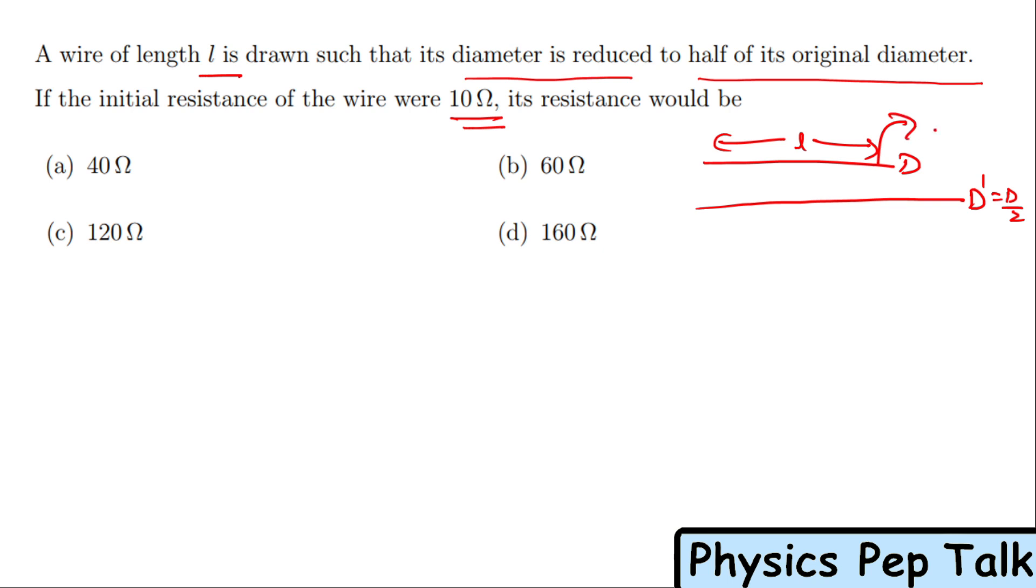Initially, that wire has resistance R equal to 10 ohms. We know R = ρL/A, where L is the length of the wire, A is the cross-sectional area, and ρ is the resistivity of the material. Here we can write area as πR².